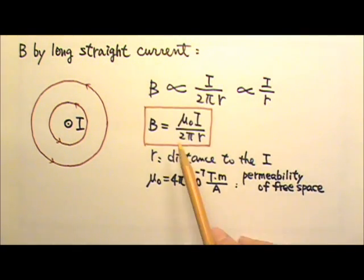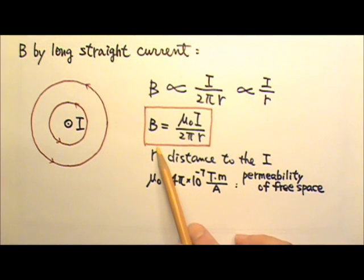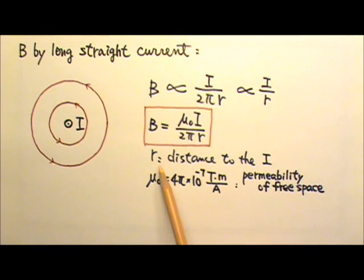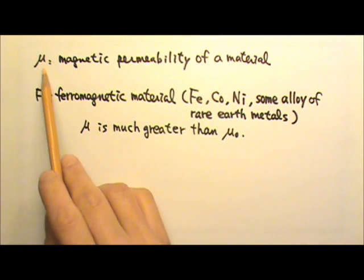It turns out that the magnetic field produced by a long straight current equals to mu nought I divided by 2 pi r, where the r is the distance to the long straight current. And the mu nought is the permeability of free space. The free space here means vacuum. And the mu nought equals to 4 pi times 10 to the negative 7th tesla times meters per amp. You do need to know this equation, but you do not have to memorize the mu nought value.